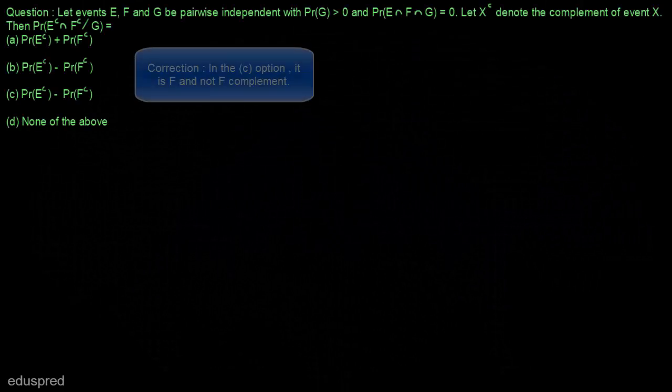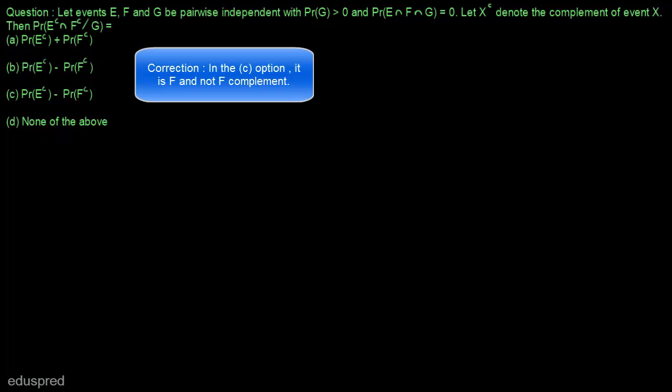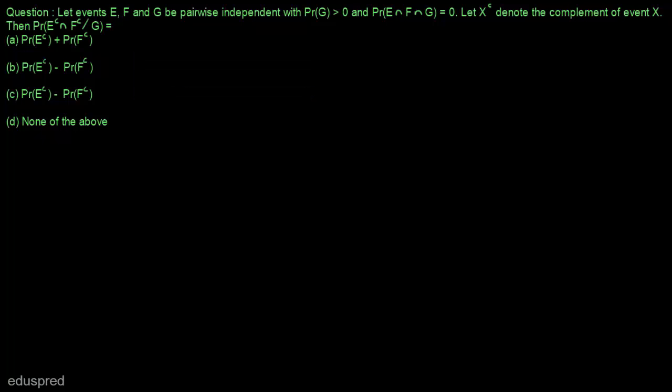In this video, I am going to solve this question. Let events E, F and G be pairwise independent with probability of G greater than 0 and probability of E intersection F intersection G equal to 0. Let Xᶜ denote the complement of event X. We have to find the probability of Eᶜ intersection Fᶜ given that event G has already happened.